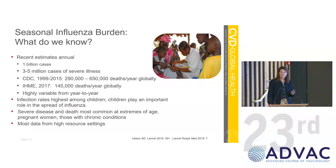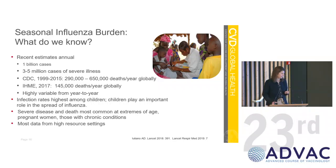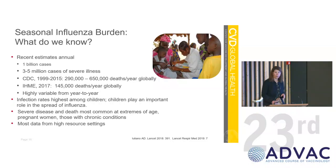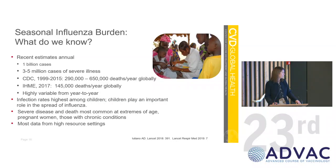We see infection rates highest among children, and we believe children play an important role in the spread of flu. Severe disease and death are most common at extremes of age. Pregnant women do have higher morbidity, as Jan mentioned, and those with chronic conditions. We acknowledge that most of these data come from high resource settings.